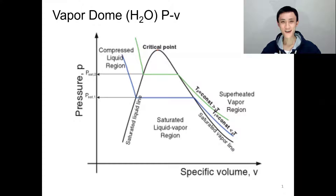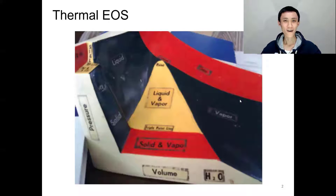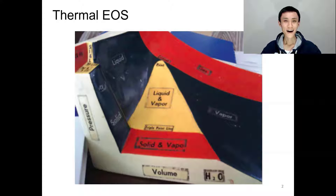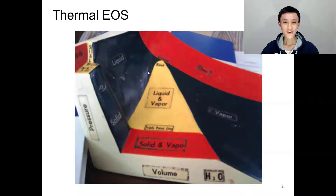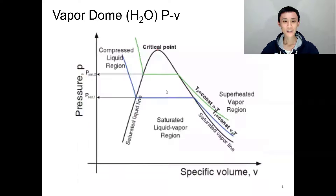This is the vapor dome we just talked about. You may be curious where this dome comes from. Let's take a look at the thermal EOS we discussed before. If you look at this model from the front — the front view in technical drawing — the x-axis is volume and the y-axis is pressure, and the projection is going to be a dome.